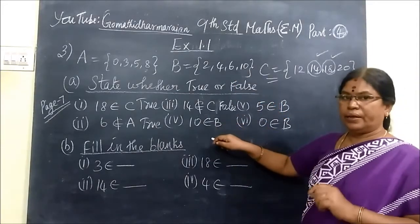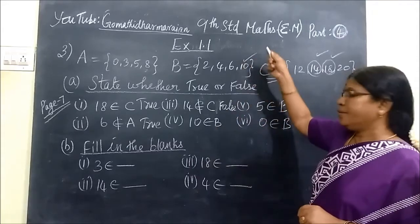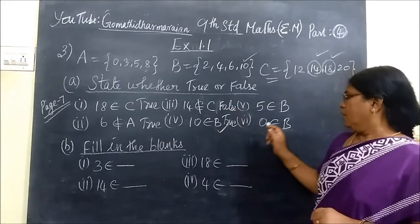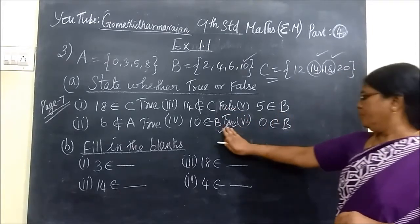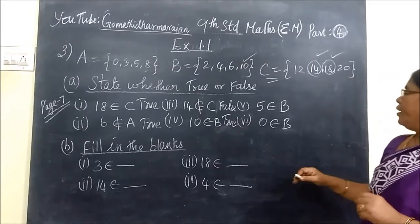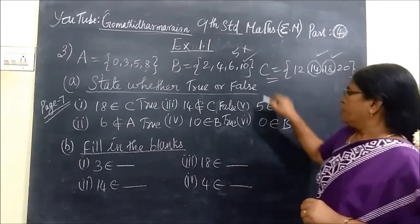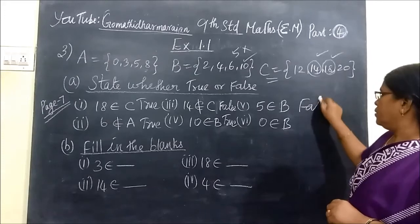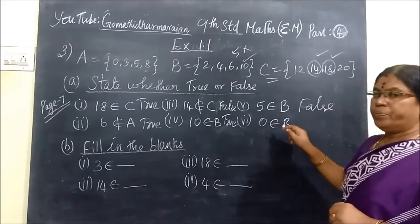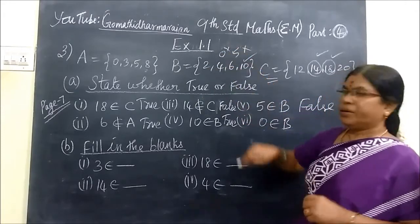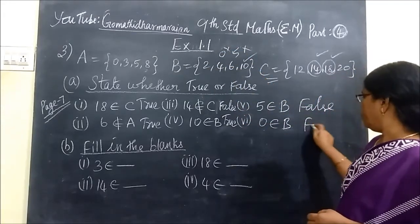This means 10 is the element of B. 10 is here, so this one is true. And 5 belongs to B. 5 is not here, so this one is false. And 0 belongs to B. No 0 at all, 0 is not the element of B, so this one is false.